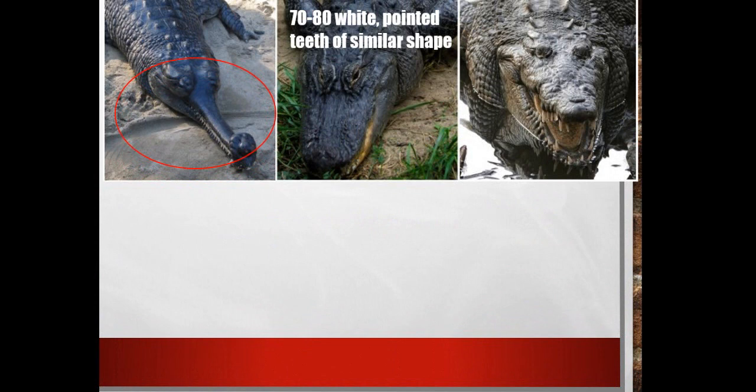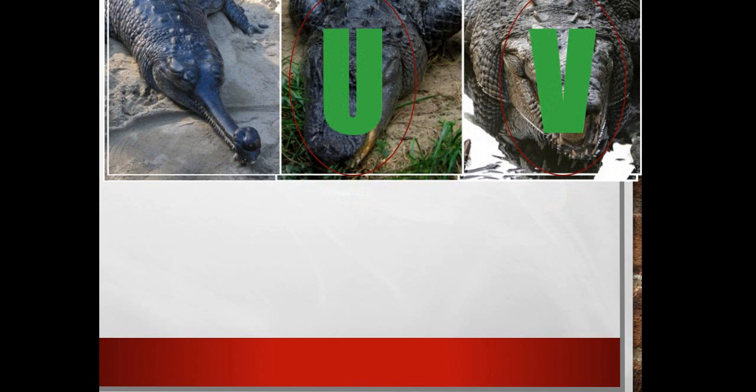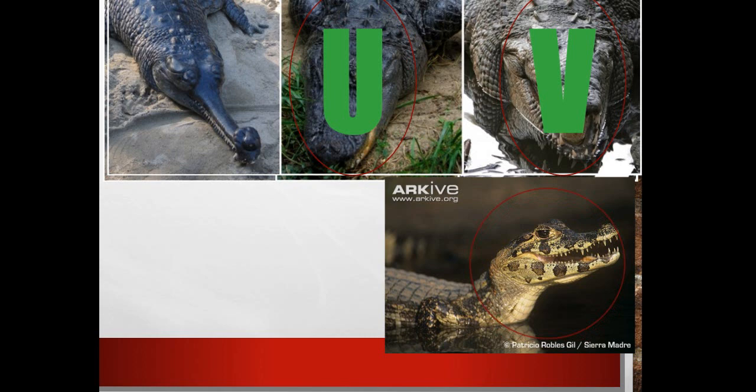Here are some diagrams from this lecture: first is the Gharial, second is the Alligator, third is the Crocodile, and fourth is the Caiman. Alligators have a U-shaped snout and crocodiles have a V-shaped snout.